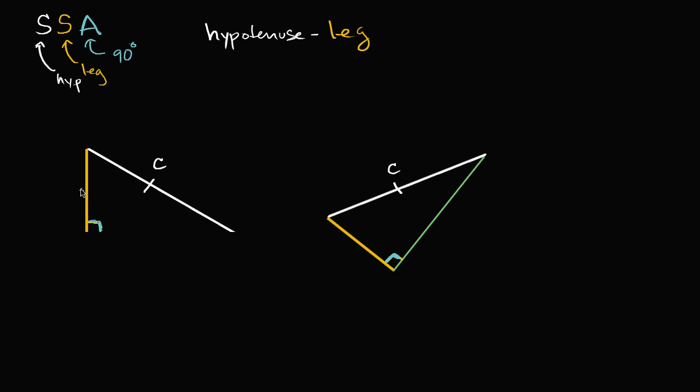We can assume that this leg here has the same length as that leg. We could call that length A.